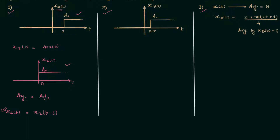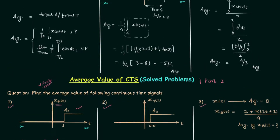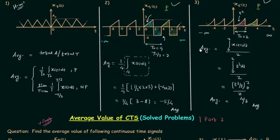We already know the process to calculate the average value of non-periodic signals. This signal is non-periodic because it does not have the repetition of a particular structure infinite times. The signal extends from minus infinity to infinity. In signals and systems, all signals extend from minus infinity to infinity — some are periodic and some are non-periodic. The periodic ones have a particular structure repeating infinite times, as we verified in the previous lecture for signal x4t.